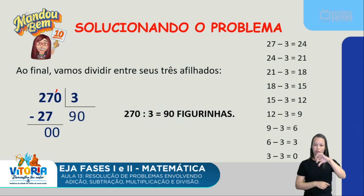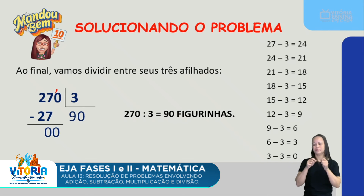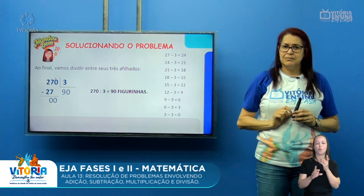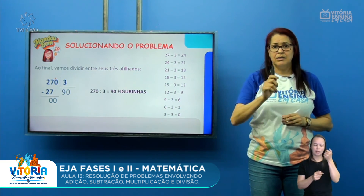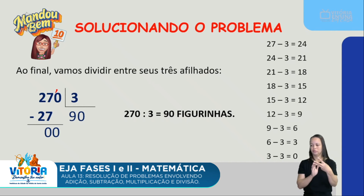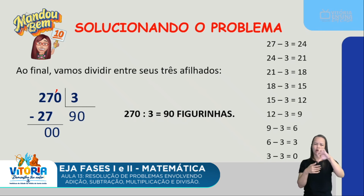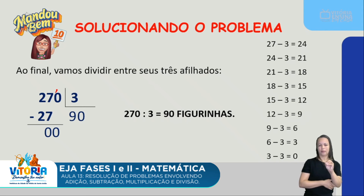Cada afiliado recebeu 90 figurinhas. Para mostrar pela subtração sucessiva, eu poderia fazer 270 menos 3 repetidamente — mas demorava muito, precisaria de 90 repetições. Então peguei só o 27: 27 menos 3 é 24; 24 menos 3 é 21; 21 menos 3 é 18; 18 menos 3 é 15; 15 menos 3 é 12; 12 menos 3 é 9; 9 menos 3 é 6; 6 menos 3 é 3; 3 menos 3 é 0. Quantas repetições? 1, 2, 3, 4, 5, 6, 7, 8, 9 — encontro o 9 da divisão. Como estou trabalhando com 270, acrescento o zero: quociente é 90.